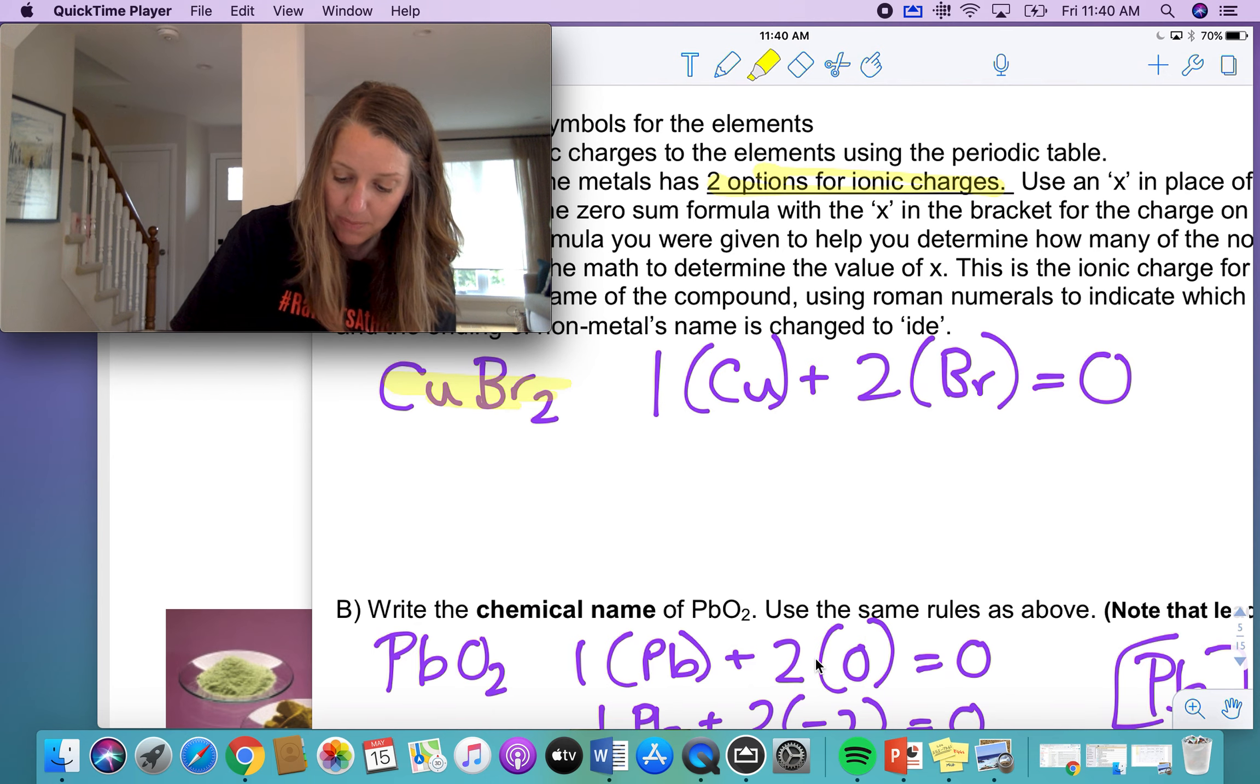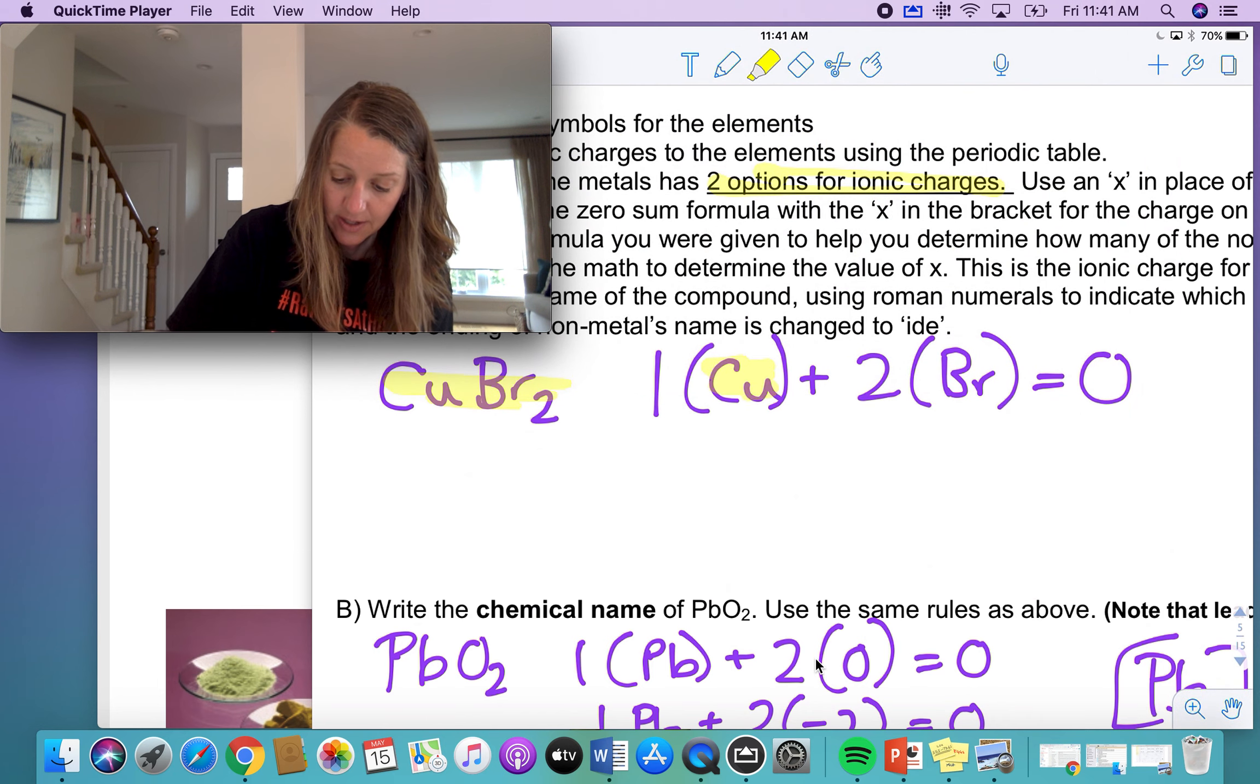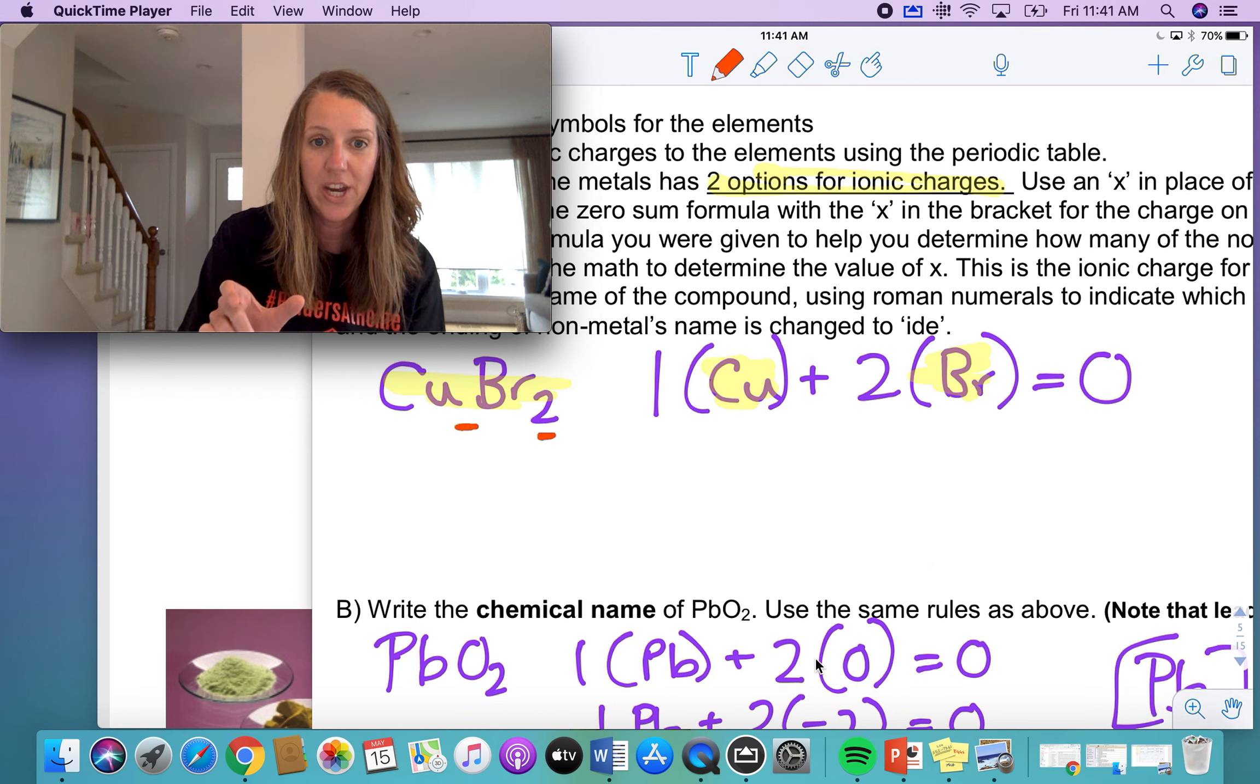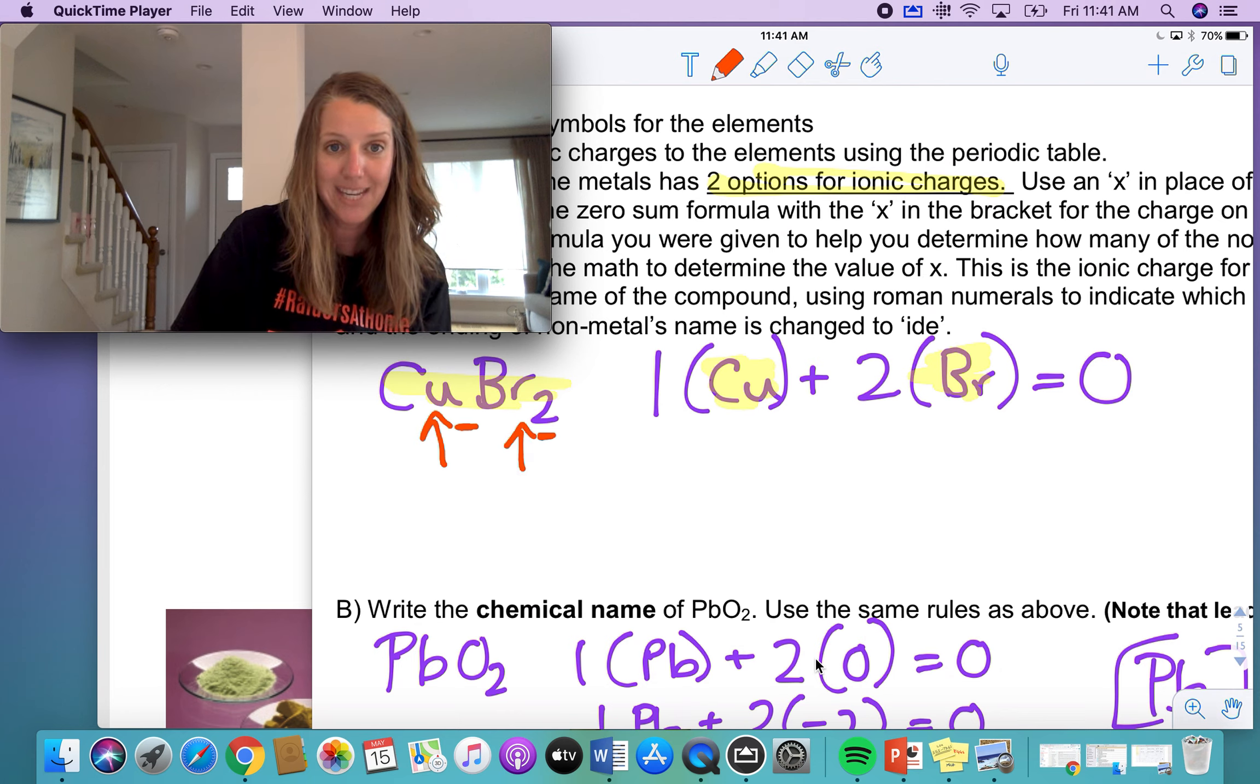So here we go. CuBr, I know that I've got one copper and I have two bromine. Where did I get that information from the formula? The subscript, the numbers down below, tell me the ratio of those atoms, one copper, two bromine. That's what that means.